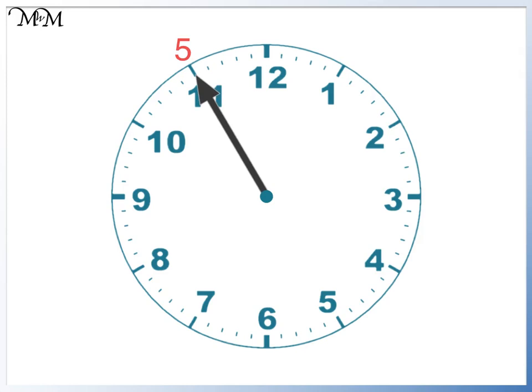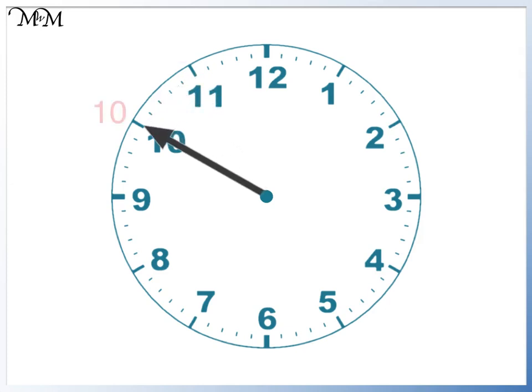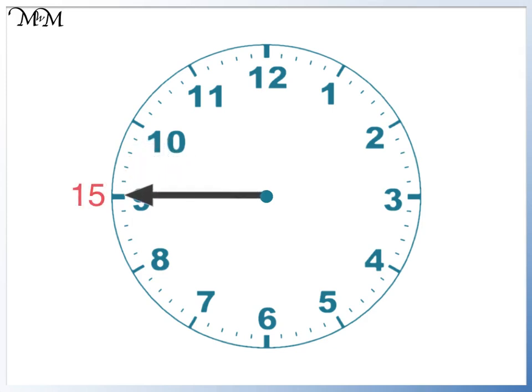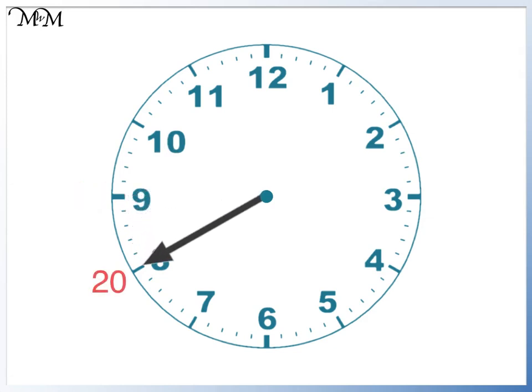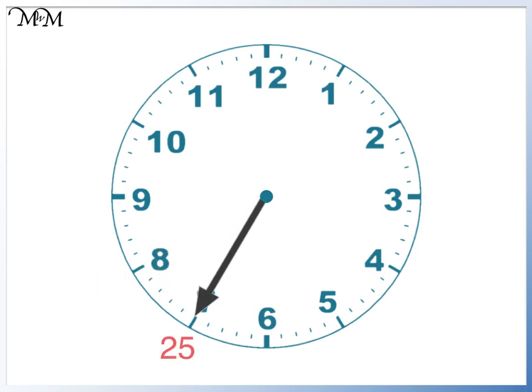We can continue to count anti-clockwise in fives to find out how many minutes to the next hour. So this is 5 minutes to, 10 minutes to, 15 minutes to — we call this quarter to — 20 minutes to.